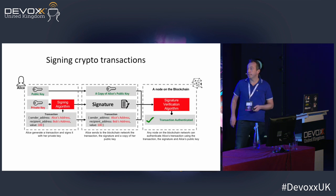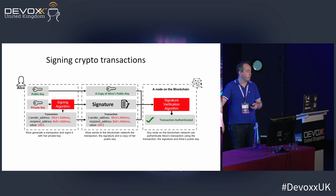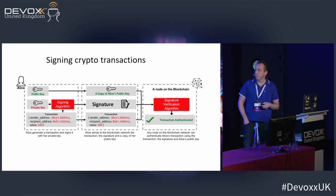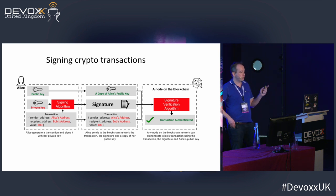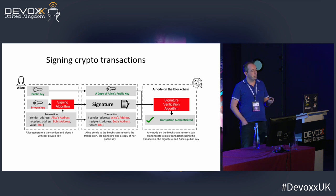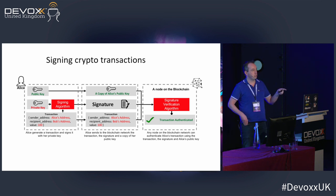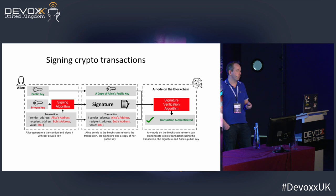An application of digital signatures is in crypto transactions. If Alice wants to initiate a transaction to Bob — say sending 100 of some currency — she makes a transaction and signs it with her private key. She sends the signature, her public key, and the transaction over the network. It will be received by a node in the blockchain. From there, the signature can be verified: if the signature decrypted with the public key matches the hash of the message, then Alice is confirmed as the sender, the transaction is untampered, and it's authenticated.